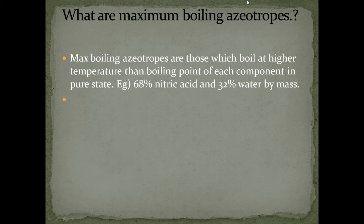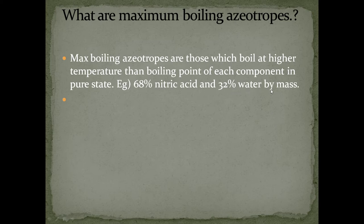What are maximum boiling azeotropes? Maximum boiling azeotropes are those which boil at a higher temperature than the boiling point of each component in the pure state. Example: 68% nitric acid and 32% water by mass.